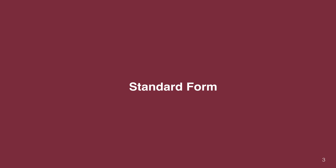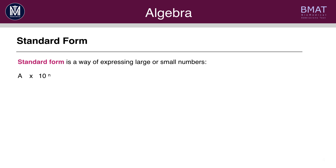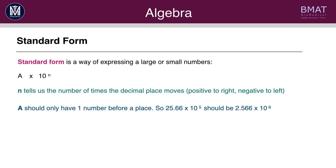To begin with we'll have a look at standard form. Standard form is a way of expressing very big or very small numbers. It's given in the form of a times 10 to the power of n. n tells us the number of times the decimal place moves. If n is positive it means the decimal place moves to the right. If n is negative it means the decimal place moves to the left.